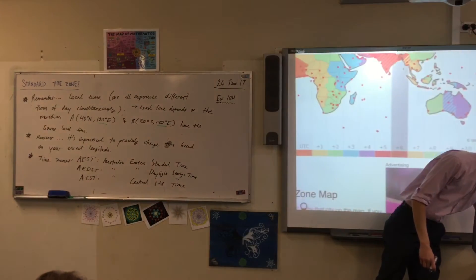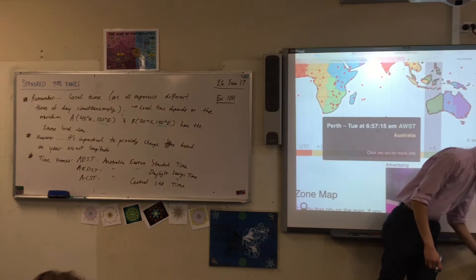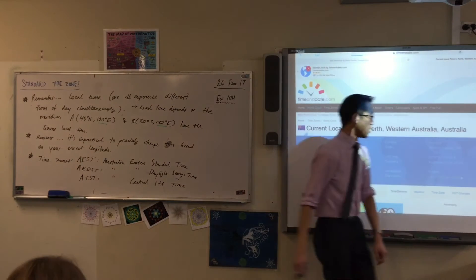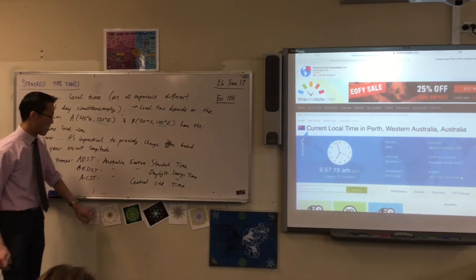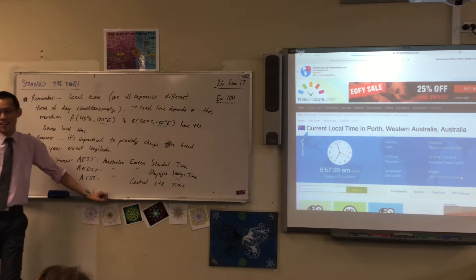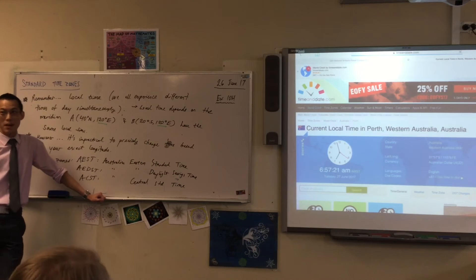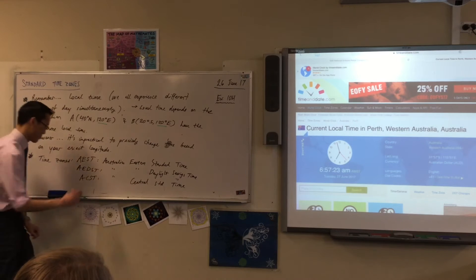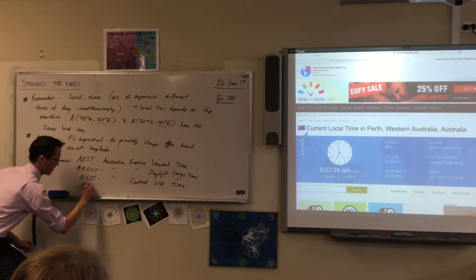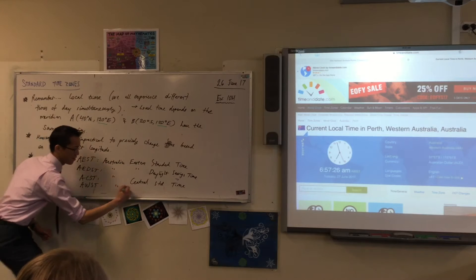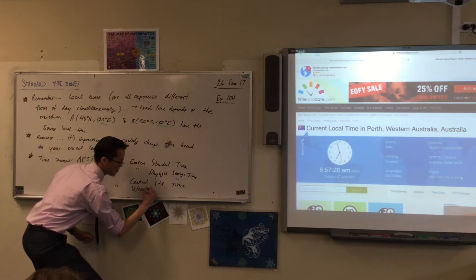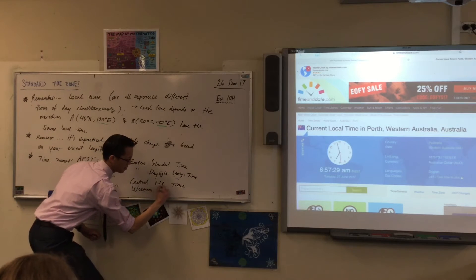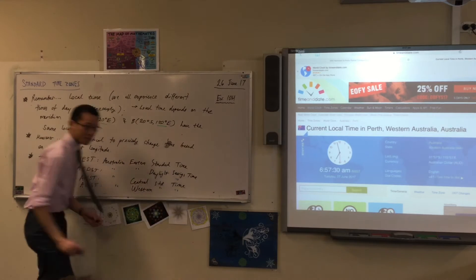And then here is Perth. No prizes for guessing the name of the time zone that Perth is in — A-W-S-T, for Australian Western Standard Time.